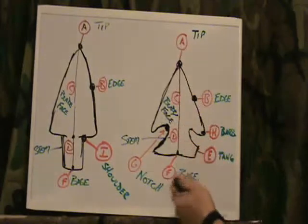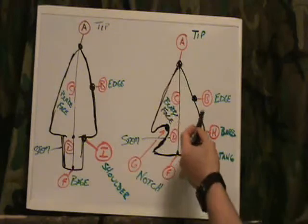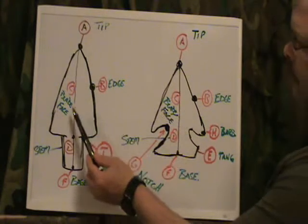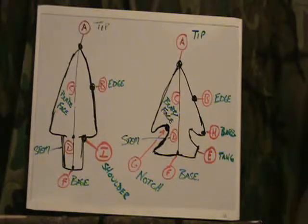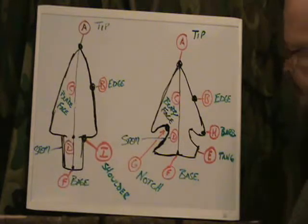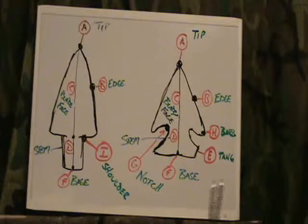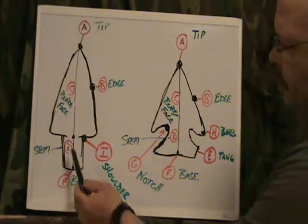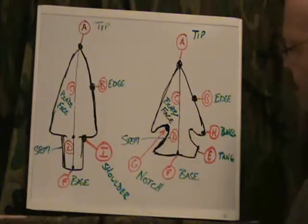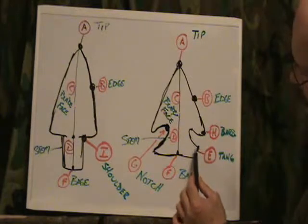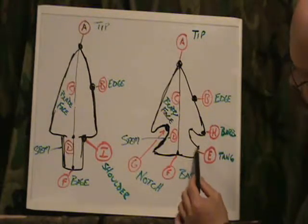The tip is always going to be the top. Working our way down, we have the base, which will be your edge. C is right here, which is actually the blade or the face of the projectile point itself. This line — which I did not mark but did put there — is also known as the medial ridge, and that will come into play when you're shaping your point. D is going to be our stem. E — and I don't happen to agree with this, but that's what the archaeologists wanted to call it — this part right here, between here and here, is known as a tang.